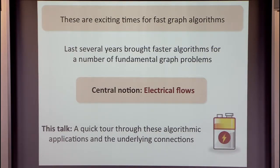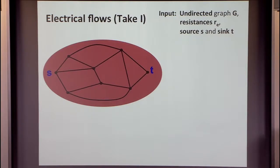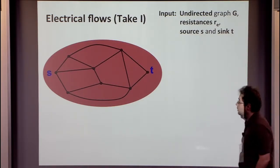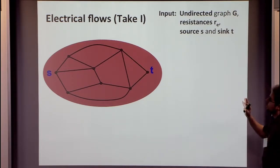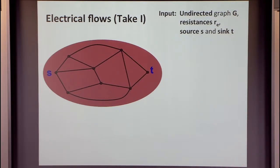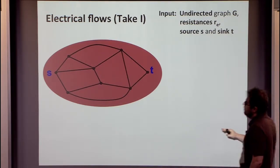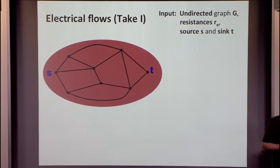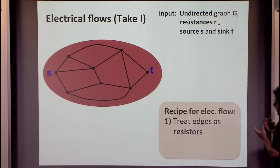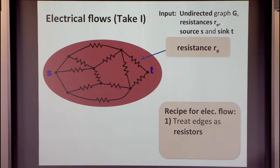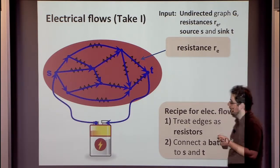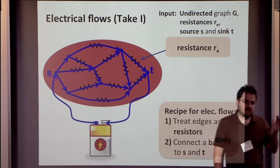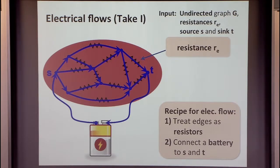Let us start by defining the main object of this talk: the notion of energy graph flow. Whenever we talk about energy graph flows, we always think about having some undirected graph. Usually we have some source S and sink T, and there will be some resistances assigned to edges. One way to get an energy graph flow is very simple: you treat edges as resistors of the corresponding resistance, connect a battery to S and T, and look at the current that settles there. That's exactly the electrical flow as we know from Physics 101.